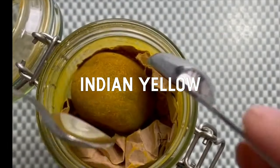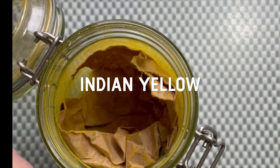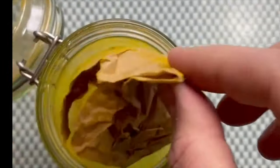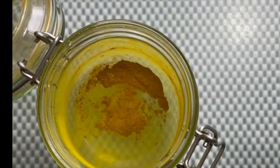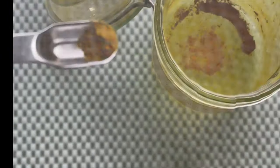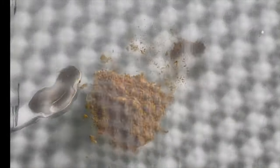This pigment has been banned for over 100 years. This is a ball of genuine Indian yellow. The story behind it goes that it was obtained by feeding cows only with mango leaves. This caused the cows to be sick and malnourished, so it was banned and seen as animal cruelty.